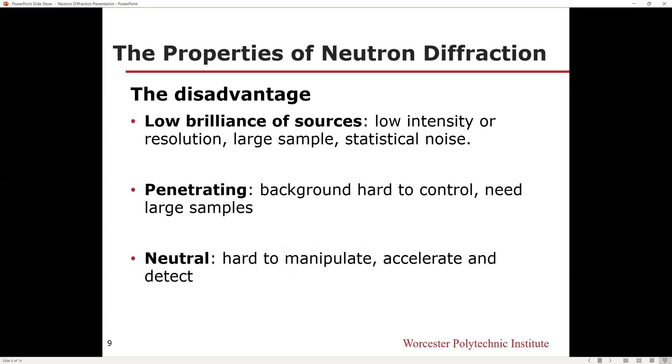The disadvantage of neutron diffraction is its low brilliance of source, which means the test sample must be large enough, and the data obtained from neutron diffraction will have statistical noise. And also because of its penetrating nature, it's very hard to control the background of neutron diffraction data, and the materials used for studying need to be large enough.